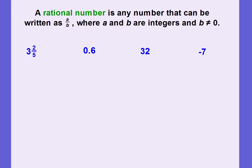A rational number is any number that can be written as a divided by b, where a and b are integers and b does not equal zero. Rational numbers can be written in fraction form, because this fraction bar right here means to divide. So it's a divided by b, where a and b — meaning the numerator and the denominator — are both integers. And b cannot equal zero. You cannot divide by zero. That just cannot be done. So you have to make sure that the divisor or the denominator, b, does not equal zero.